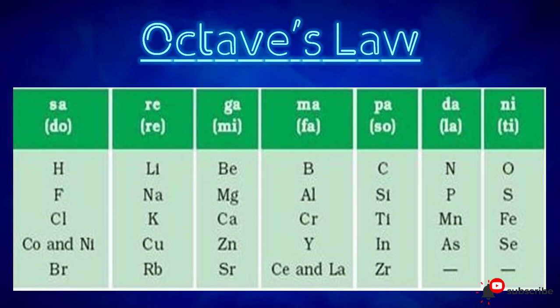Newland arranged the elements in order of their increasing masses in such a way that the properties of the eighth element starting from any point were similar to those of the first one. This reminded him of the eighth note known in the octave of music — that is, Sa, Re, Ga, Ma, Pa, Da, Mi — and then again coming back to Sa.